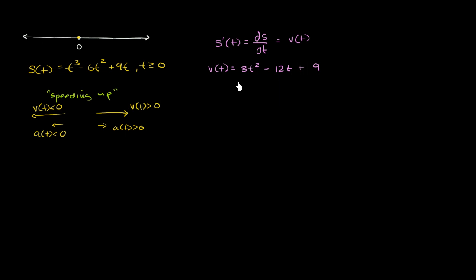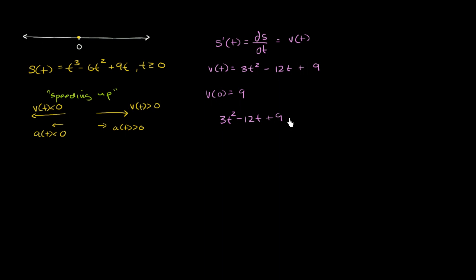Let's graph this velocity function to make sense of it: when is the velocity positive, when is it negative, and what is the acceleration doing in those intervals? To help graph it, we find the vertical intercept: v of 0 equals 9. That's where we intersect the vertical axis. Now let's figure out where it intersects the t-axis by setting this equal to 0: 3t squared minus 12t plus 9 equals 0. Dividing both sides by 3 gives t squared minus 4t plus 3 equals 0.